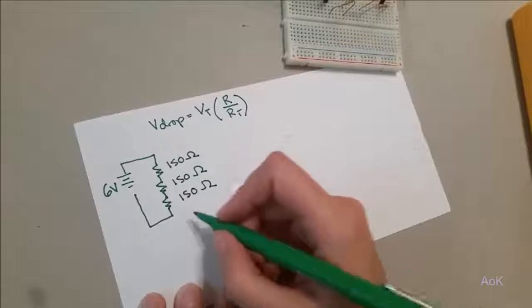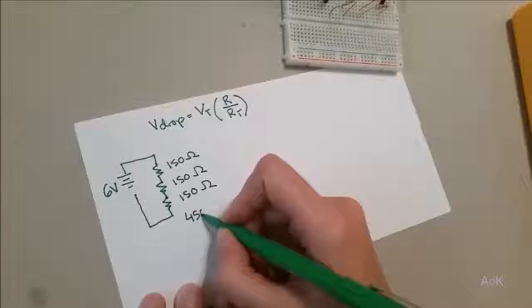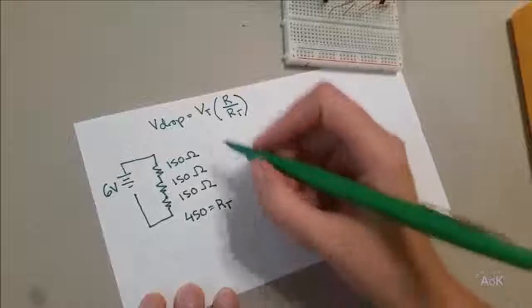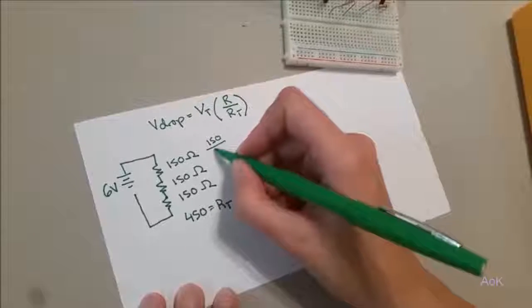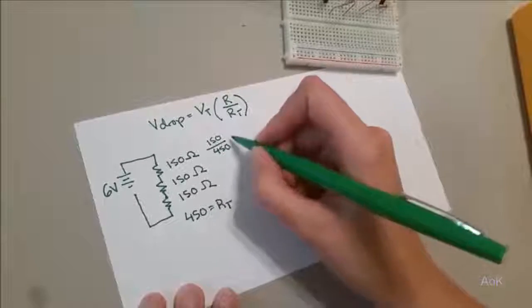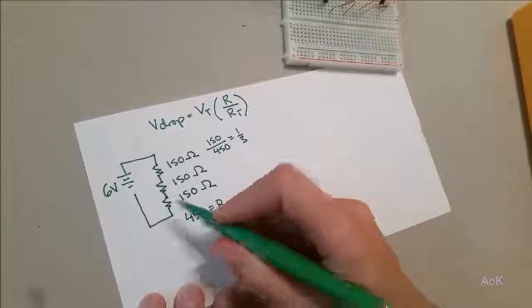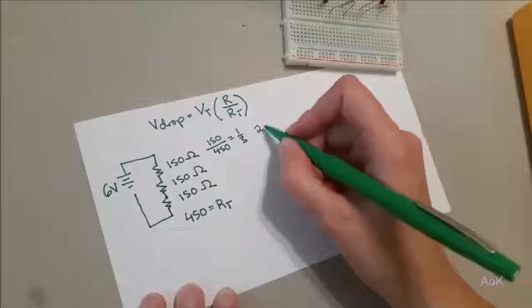This adds up to a total of 450 ohms. The ratio is 150 over 450, which is exactly one-third. One-third of 6 volts is going to be 2 volts.